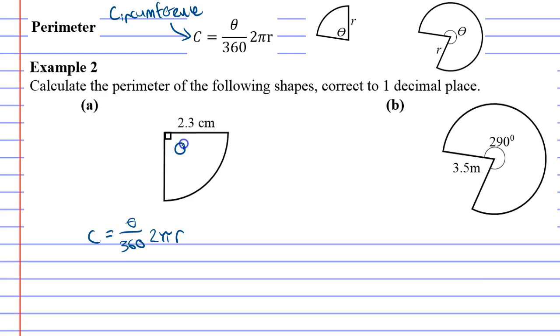Now theta represents the angle, which in this case is 90 degrees, and R as always represents the distance from the center to the edge of the circle.